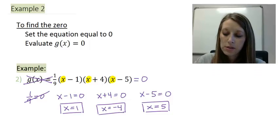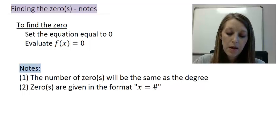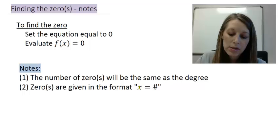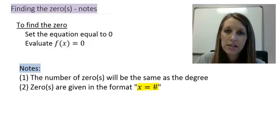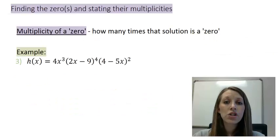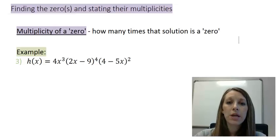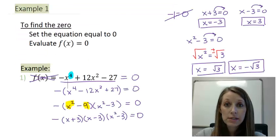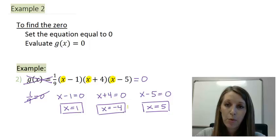Let's note some things about finding zeros: the number of zeros is the same as the degree, so a degree-5 polynomial should have five zeros. Also notice that all solutions so far are in the format x equals a particular number, where that number is the zero — and we saw that in both example one and example two. Beyond finding zeros, there's another step we can add: finding the multiplicity of each zero, meaning how many times is each zero an actual solution? In our last two examples, each zero is only a solution one time.